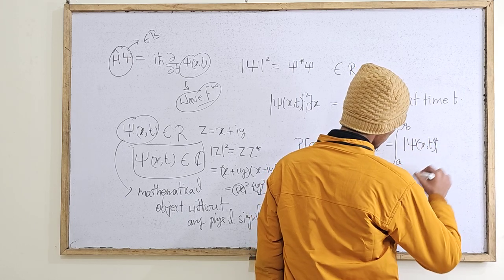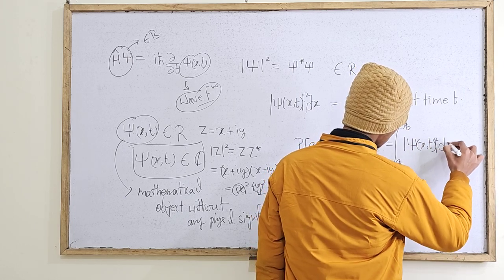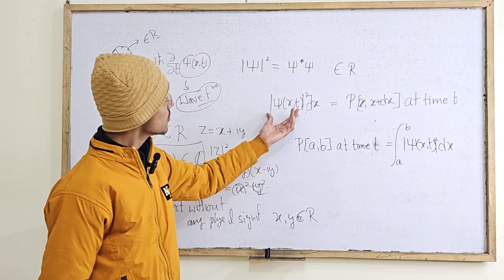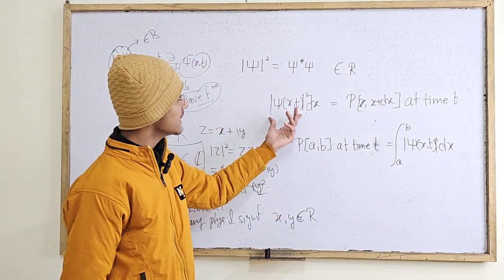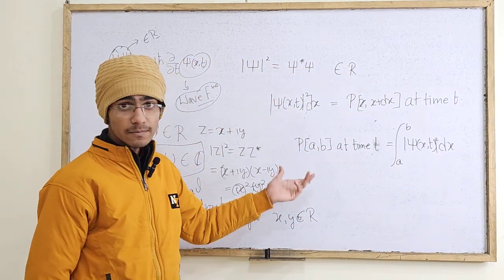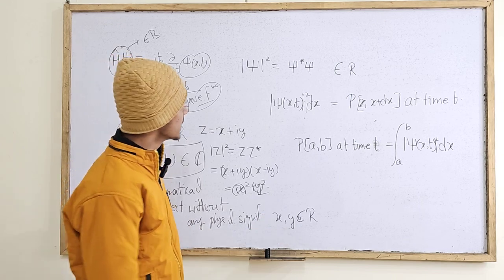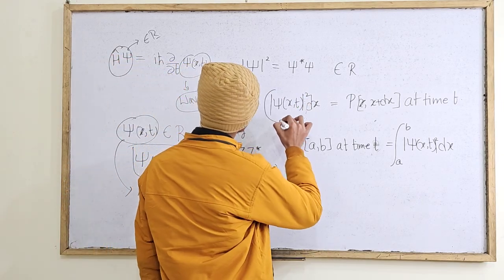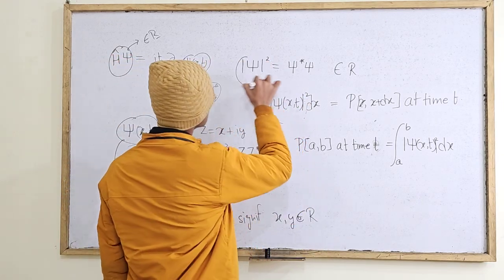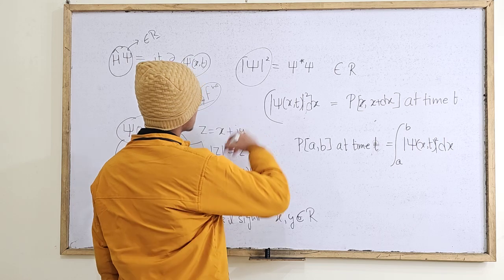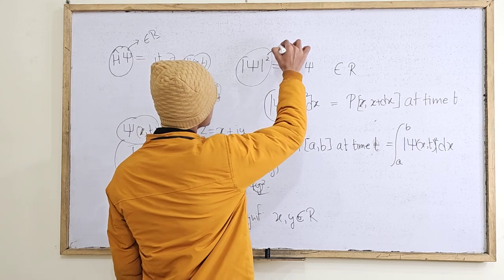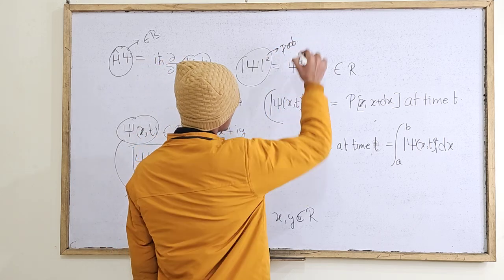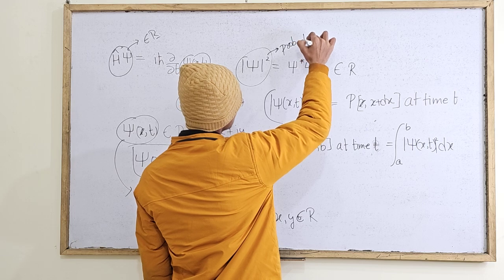That integral gives the probability. Is cheez ko probability density bhi kaha jata hai — the quantity |ψ(x,t)|² itself is the probability density.